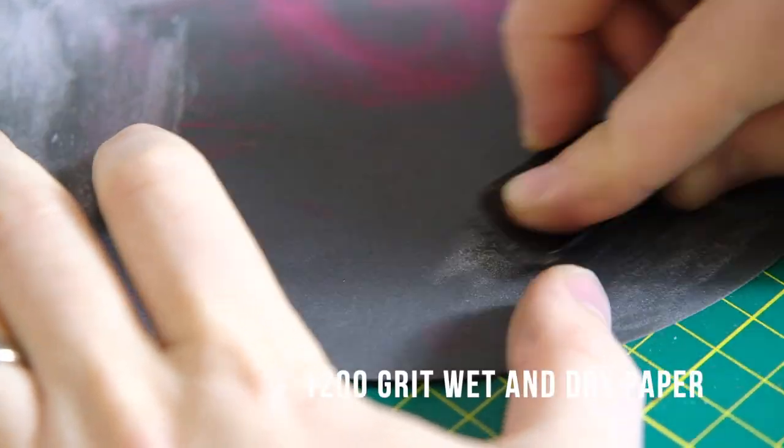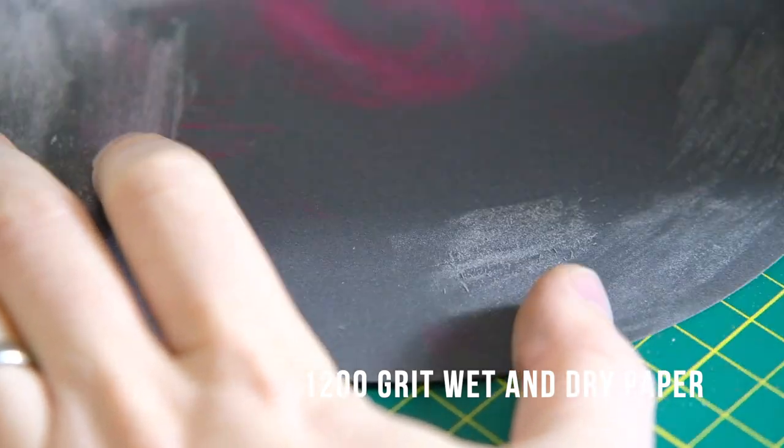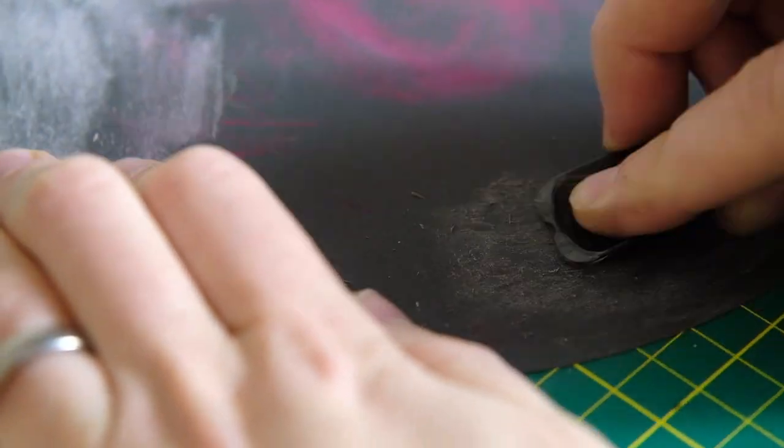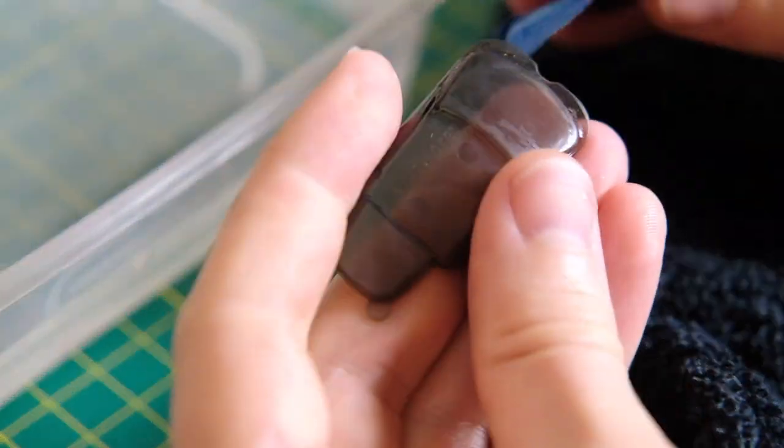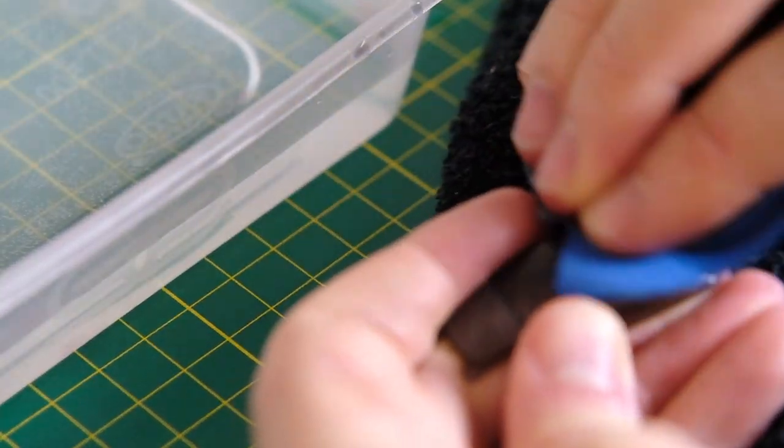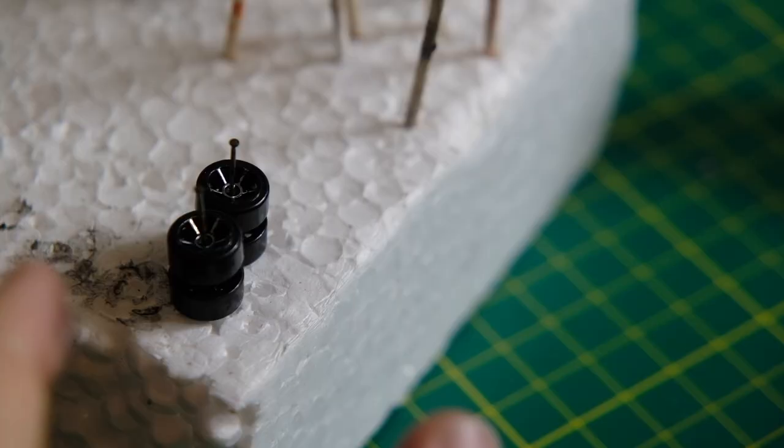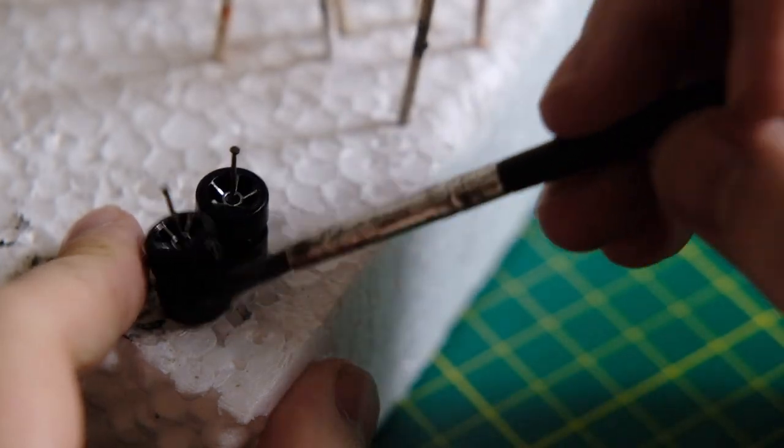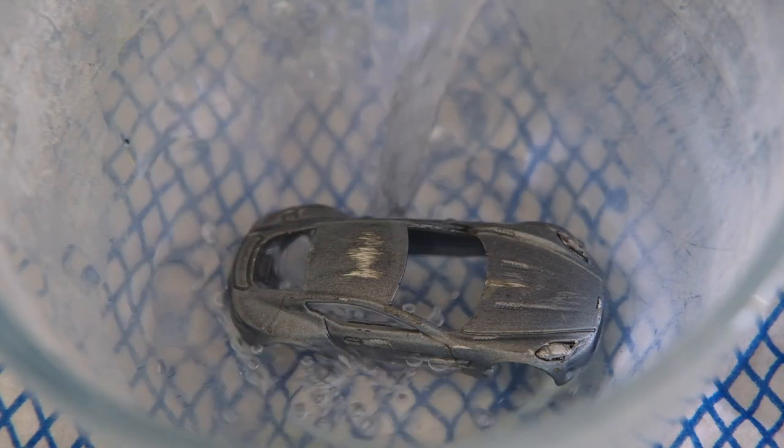The One-77 also had a seven car run towards the end of production called the Q series. These had the same specification and performance figures as the regular production One-77 but featured unique liveries and interior color schemes. One Q series example was on sale in Dubai in 2012 for 2.9 million US dollars.